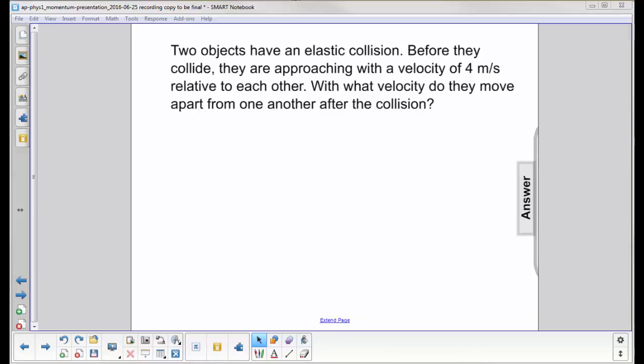Two objects have an elastic collision. Before they collide, they are approaching with a velocity of 4 meters per second relative to each other. That's their relative velocity. With what velocity do they move apart after the collision?